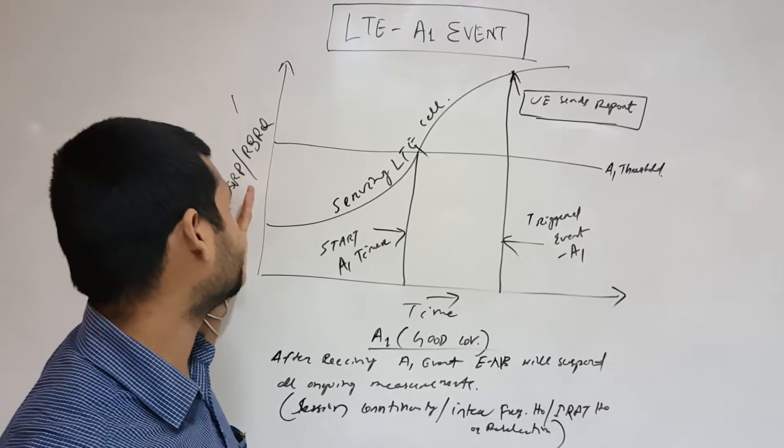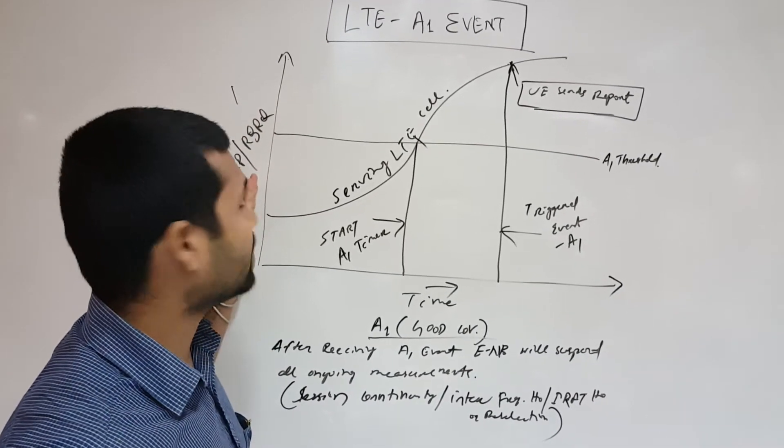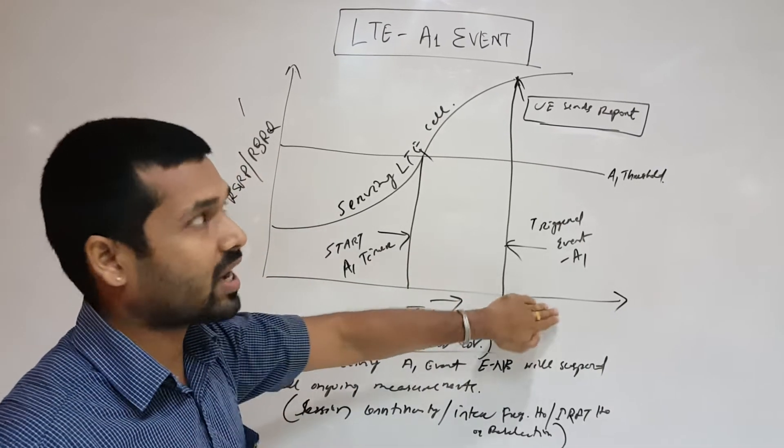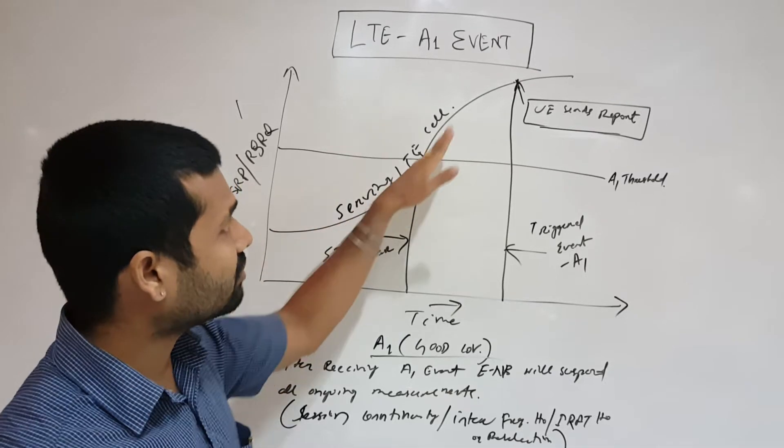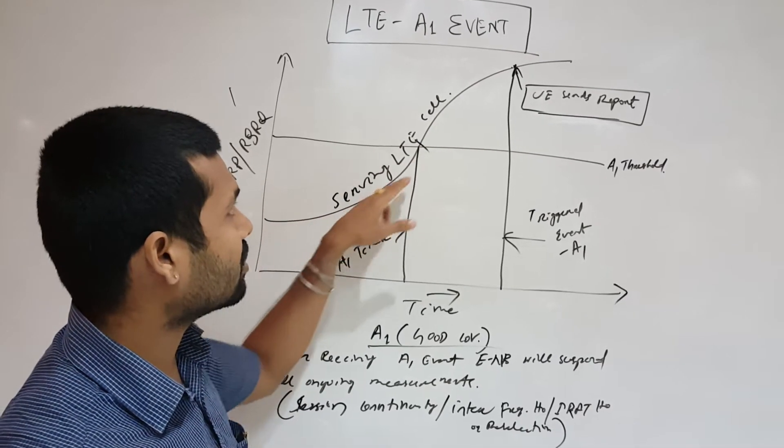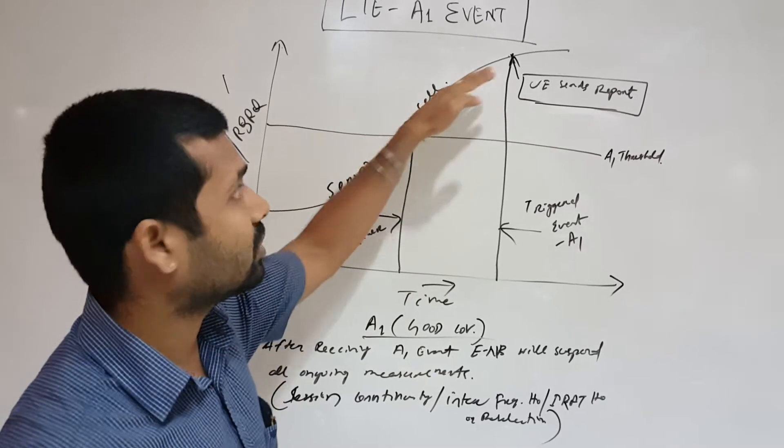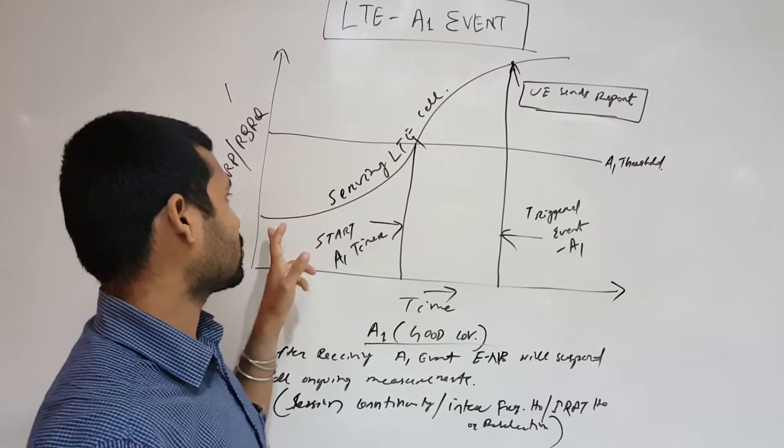This axis is RSRP and RSRQ measurements. This axis is for time. So this is the curve, normally the experience of the serving LTE cell, or the RSRP and RSRQ of the serving cell. So it was bad, you can see.